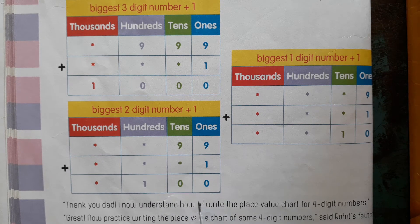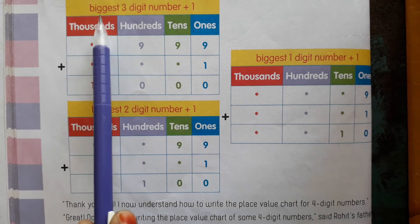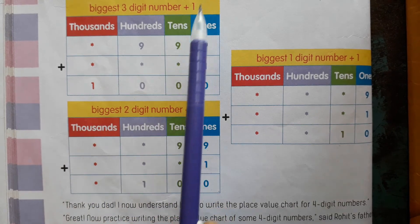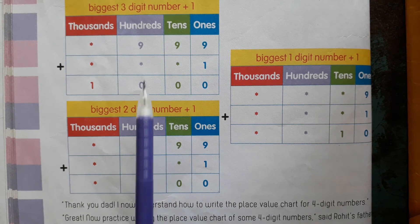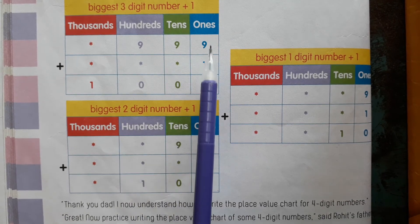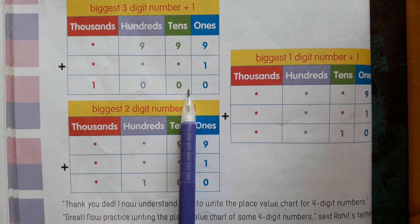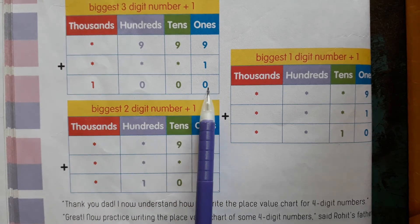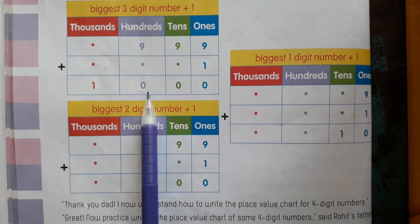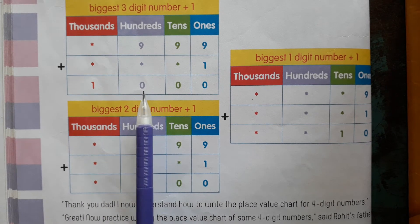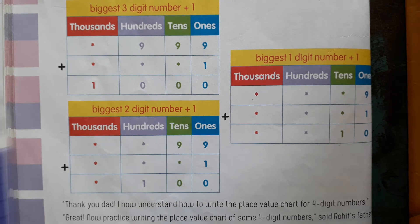100 is the smallest 3-digit number. Next, biggest 3-digit number plus 1. What is the biggest 3-digit number? 999 plus 1 equals 1000. That gives us 1's, 10's, 100's, and 1000's. This is a 4-digit number, and the smallest 4-digit number is 1000.